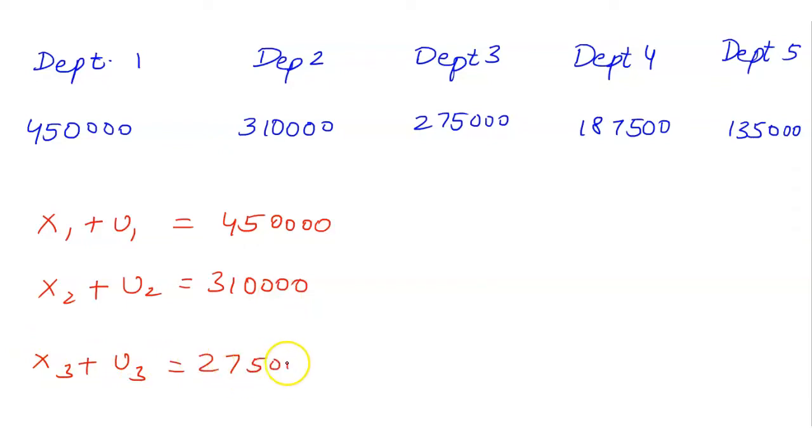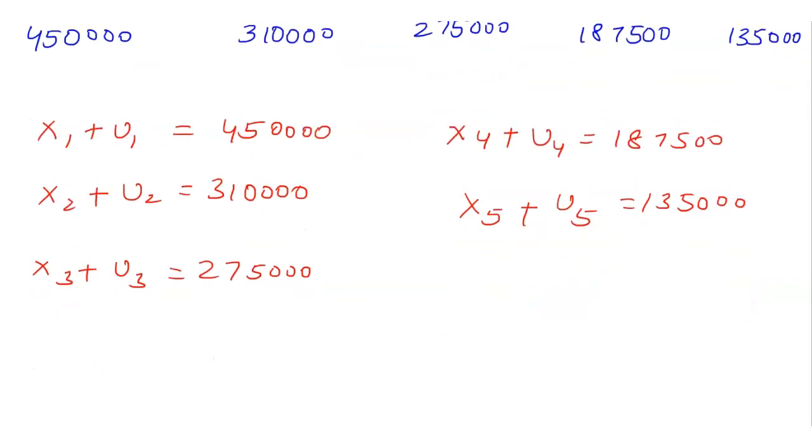x4 plus u4 is 187,500, x5 plus u5 is 135,000. Now x1 plus x2 plus x3 plus x4 plus x5 is less than or equal to 1,200,000.